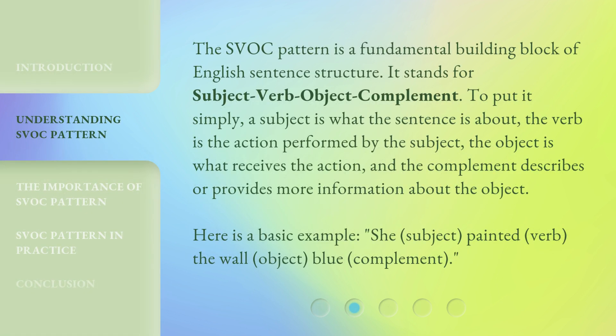The SVOC pattern is a fundamental building block of English sentence structure. It stands for subject-verb-object complement. To put it simply, a subject is what the sentence is about. The verb is the action performed by the subject. The object is what receives the action, and the complement describes or provides more information about the object.